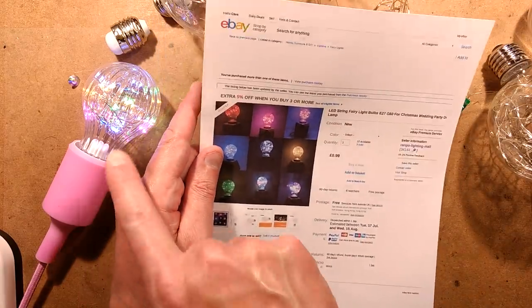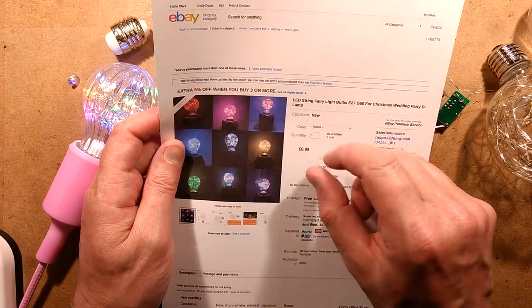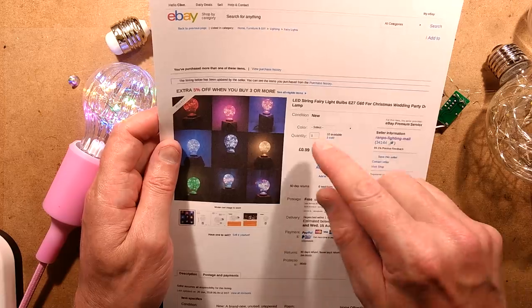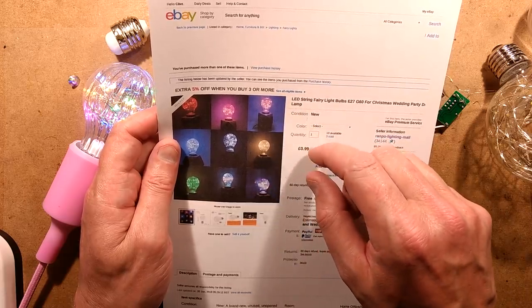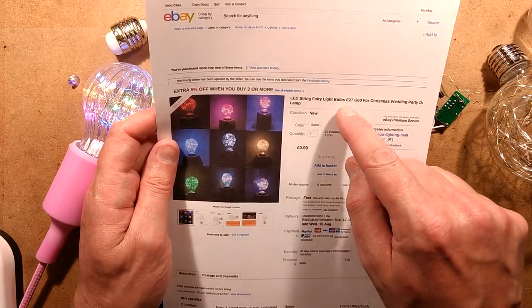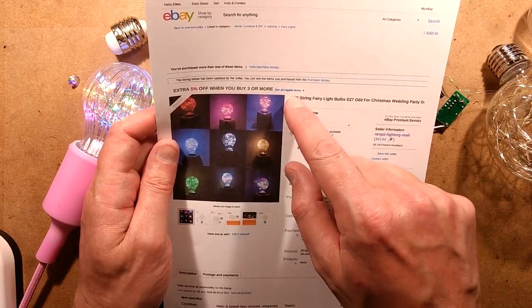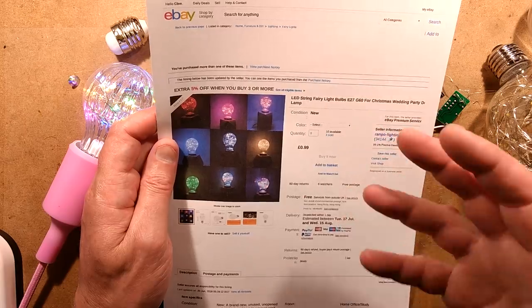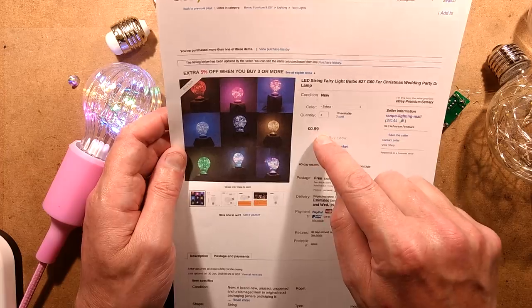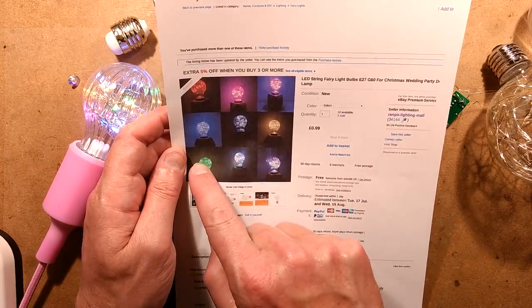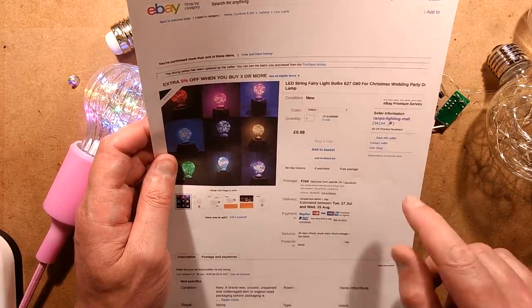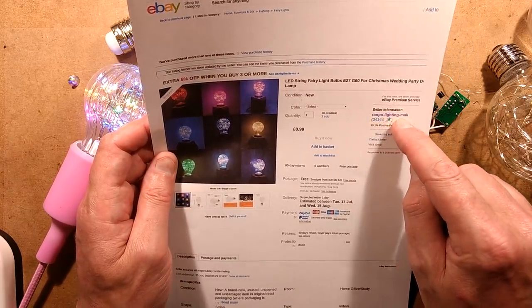The other version, which this one is, is described as LED String Fairy Light Bulbs E27 G60. So I guess ultimately a combination of those words. It doesn't use the word starry, so you're going to have to go for the G60 globe, E27 base, and then start searching for things like String Fairy Lights just to actually find this. And this one says is £0.99 - that relates only to the green ones. The other ones were £2.50, so maybe the green one is the less popular one. And this was Ranpo-Lighting-Mall.